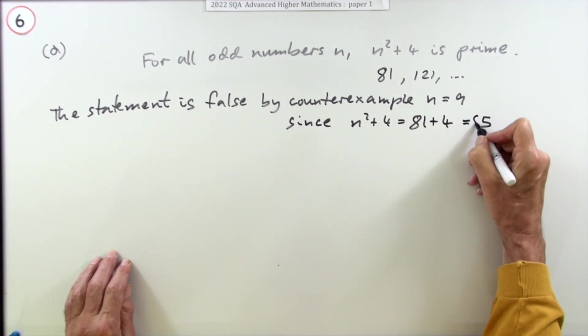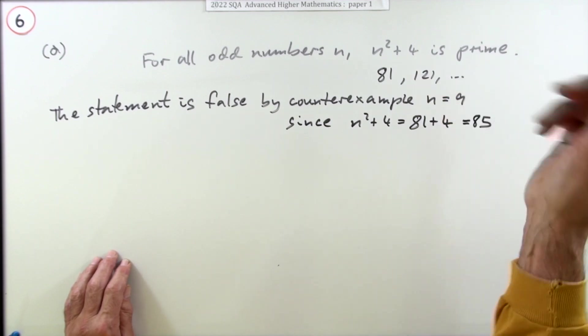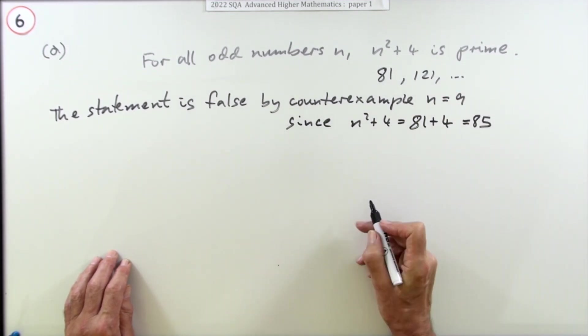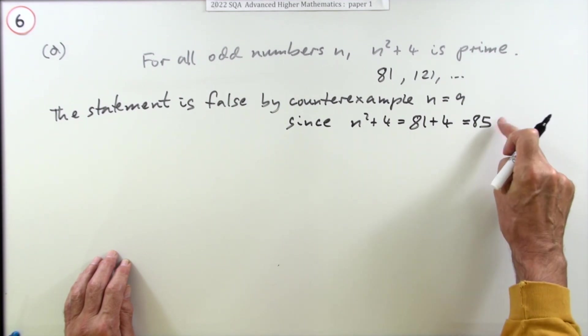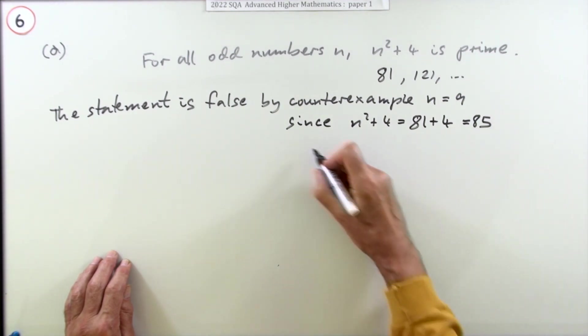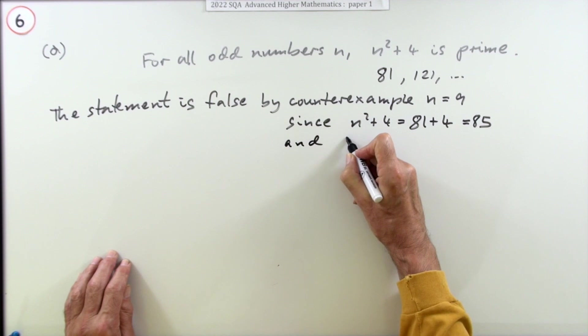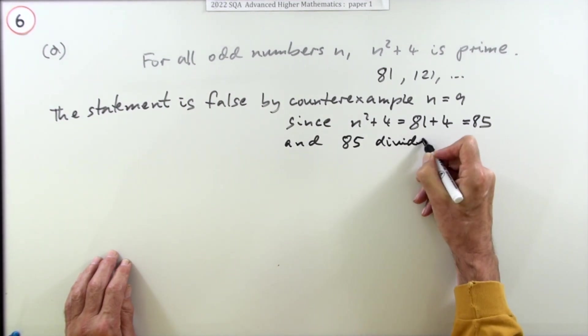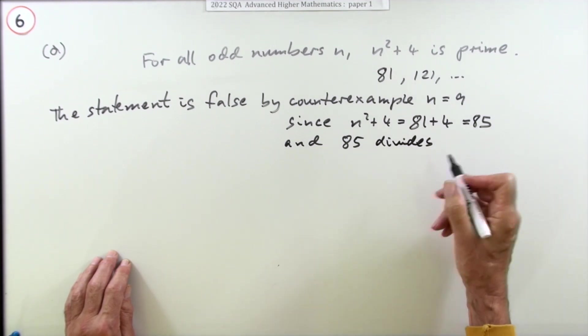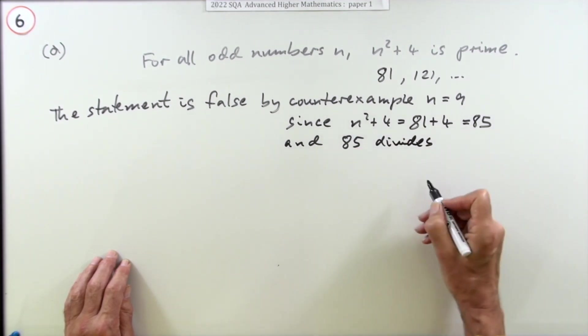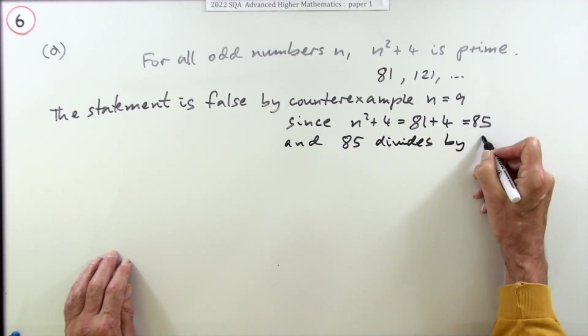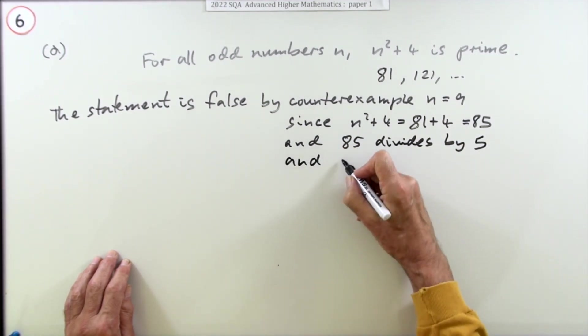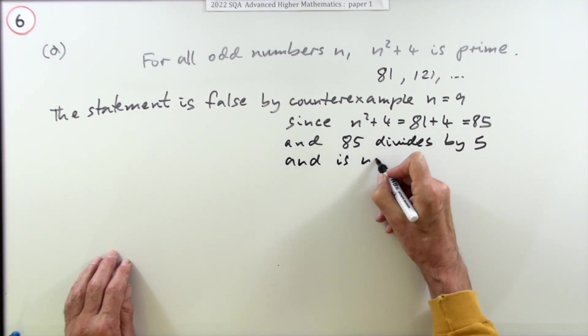That has to be there. Now you also have to state that that's not a prime number. 85 divides by five, or maybe just show the factorization, five times 17. Divides by five. Don't know if you need to put and is not prime.